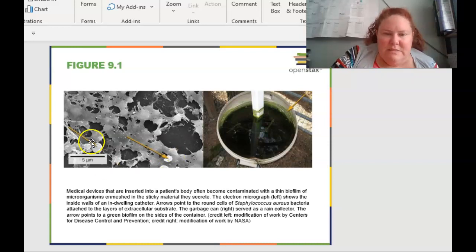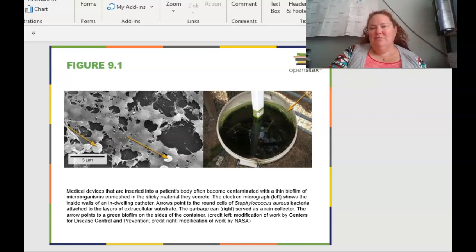These arrows are pointing to the round cells of Staph aureus bacteria that attach the layers of the extracellular substrate. And then over here on the garbage can smells like a great summer day in the swamp. So the garbage can served as a rain collector. The arrow points to the green biofilm that was grown on the sides of the container. This happens in horse troughs, cattle troughs, water, dog bowls, things left out in the hot sun. So biofilms are natural. We just try to take care of them because if they go too long, they can obviously cause lots of problems.